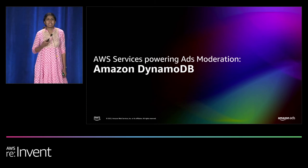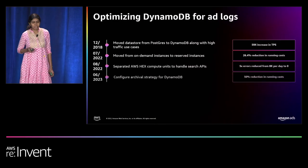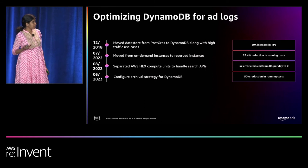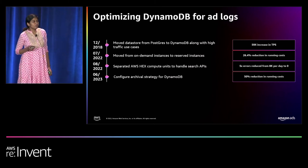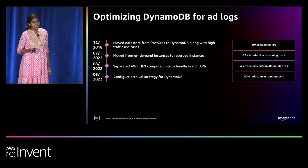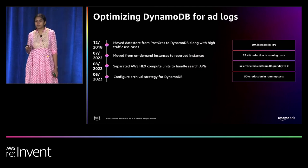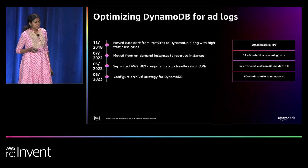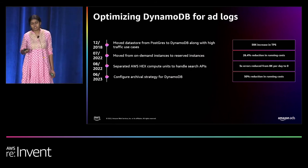The second service is Amazon DynamoDB, used to store all information about an ad. Until 2018 we used Postgres as our data store. Moving to DynamoDB in 2018 instantly increased our TPS by 59x. Moving from on-demand mode to provisioned mode cut host cost by more than 25%. We separated processing of transactions from search queries, which helped balance the load better and eliminated 5XX errors we used to observe each day. In 2023, we plan to configure an archival strategy for DynamoDB, which we expect to further reduce host cost by 50%.